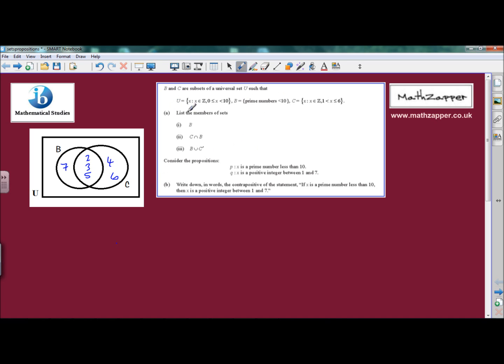And then finally the universal set itself contains all the integers from and including 0 up to but not including 10. So 0 isn't written down so far, 1 is not written. So 0, 1, 2, 3, 4, 5, 6, 7. The next one is 8 and the next one is 9. So there we've got a Venn diagram which we can now use to answer question A.